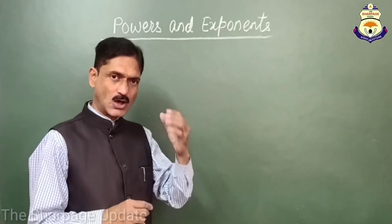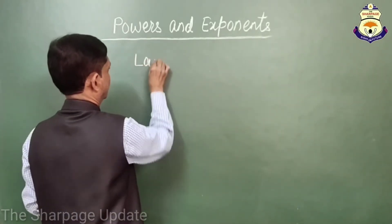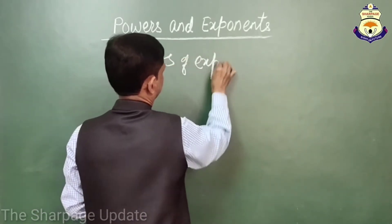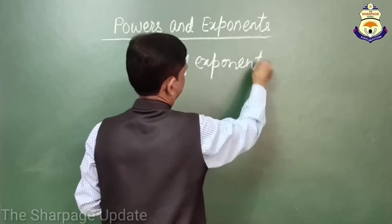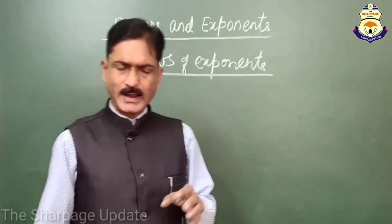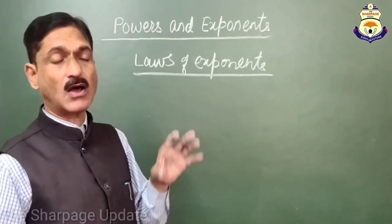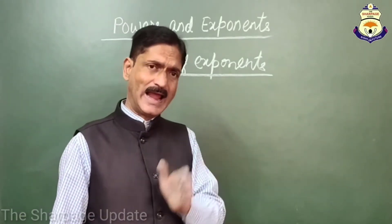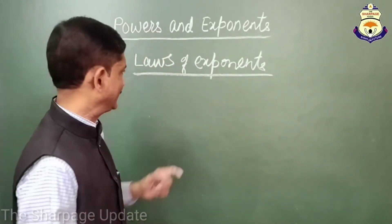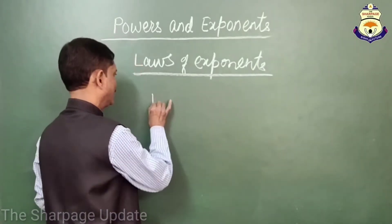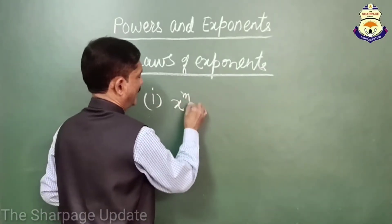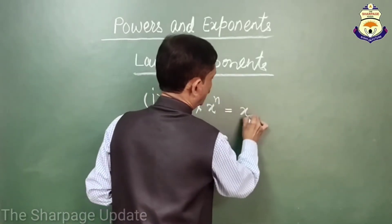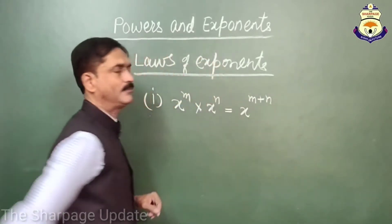Now friends, here are some laws of exponents. If x is a non-zero rational number and m and n are two integers, then according to the first law of exponents, x to the power m multiplied by x raised to the power n is equal to x raised to the power m plus n. When the base is the same in multiplication, we add the powers.